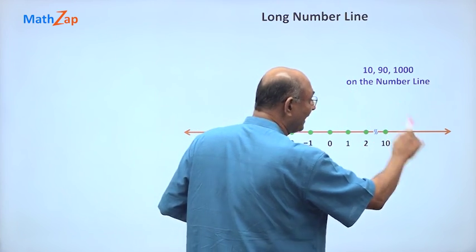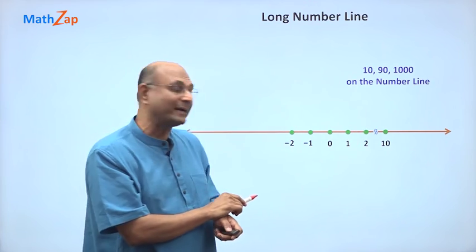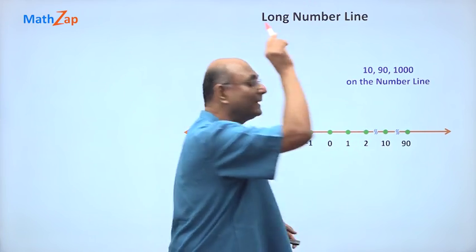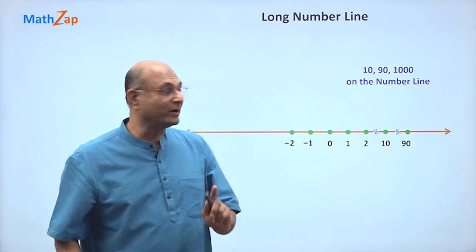90 comes after 10. 10, 11, 12, like that. If you continue, then somewhere far away you will get 90. So we put a break, then put 90. The break tells you that this gap is not 1 unit.